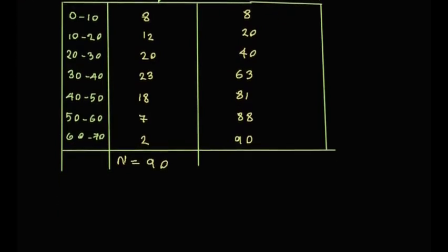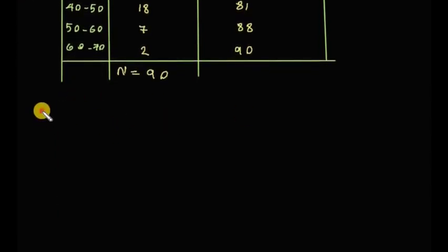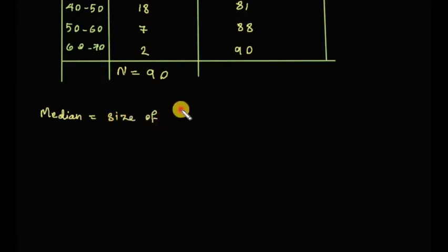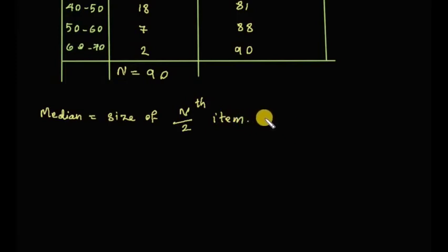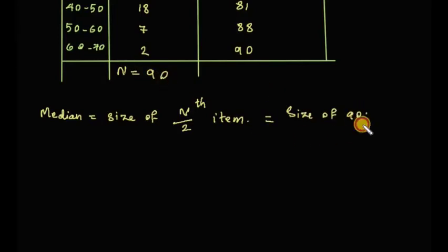The median is the size of the N/2 th item. Since N equals 90, we calculate 90 divided by 2, which gives us the 45th item. So we need to find where the 45th item falls in the cumulative frequency.